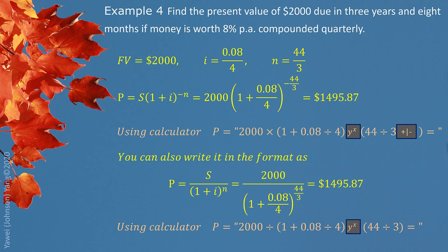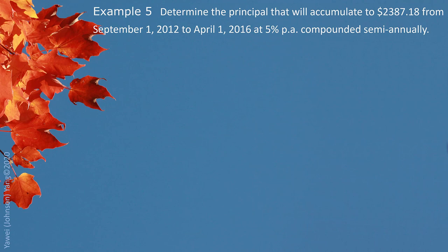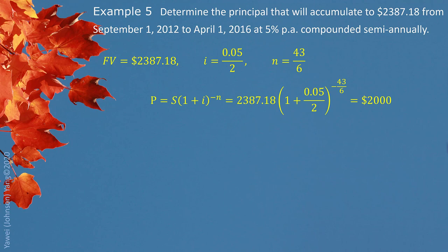Example 5: Determine the principal that will accumulate to $2,387.18 from September 1, 2012 to April 1, 2016 at 5% compounded semiannually. Clearly $2,387.18 is the future value. The periodic interest rate is 5% divided by 2 since it is compounded semiannually. We count from September 1, 2012 to April 1, 2016, which gives us 43 months. We switch 43 months to half-years: each half-year has 6 months, so 43 divided by 6 gives the number of half-years as our compounding period N. Keeping the fraction in the exponent and finishing the calculation gives us a principal of $2,000.